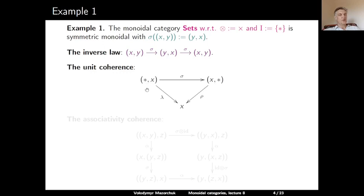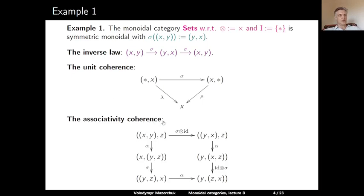Here is the unit coherence: starting from (star, X), the left unitor sends it to X. Sigma sends this pair to (X, star), and the right unitor sends it to X, so this diagram commutes. The associativity coherence: starting from (X, Y, Z), use associativity to go to X, (Y, Z), then sigma to get (Y, Z, X), and associativity again. The other path: start from (X, Y, Z), go to (Y, X, Z) via sigma, apply associativity to get Y, (X, Z), then swap X and Z to reach (Y, Z, X). This shows the category of sets is symmetric monoidal.